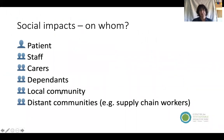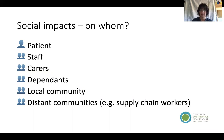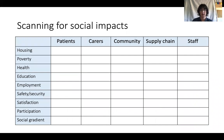Thinking about social impacts: firstly, who are the social groups impacted by the service we're working in? There are patients, of course, but also their carers, dependents, family, staff, people in the local community, and those working in the supply chain. The way we organize care can actually impact on social circumstances, which are mostly derived from the social determinants of health.